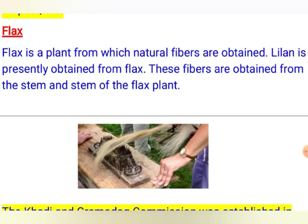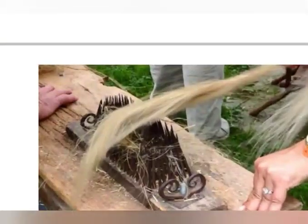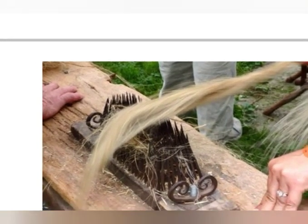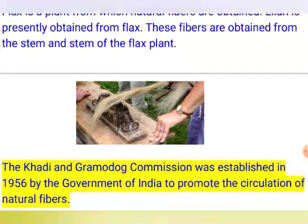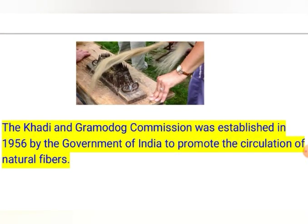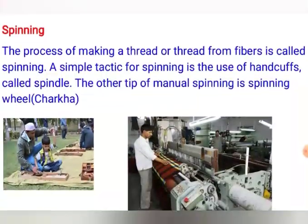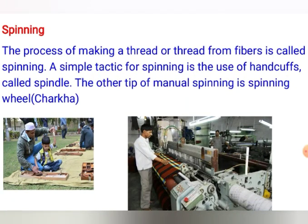Another plant fiber is flax. Flax is a natural fiber obtained from a flax plant. Linen, which is very commonly worn and very comfortable, is made from this fiber. Like jute, the fiber is obtained from the stem of the plant. The fibers are very fine, silky, and comfortable. To promote the use of natural fibers, the Government of India established the Khadi and Gram Udyog Commission in 1956.